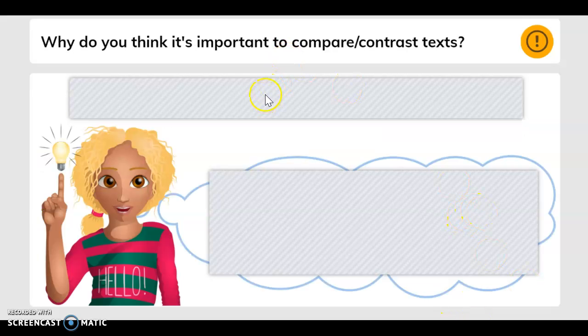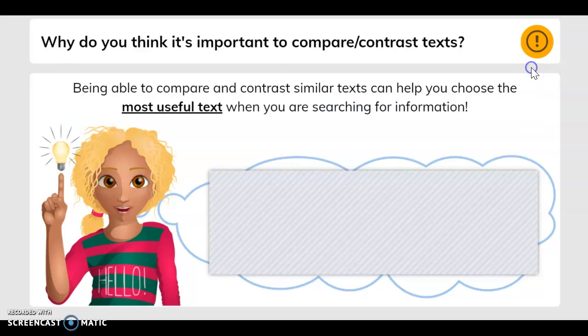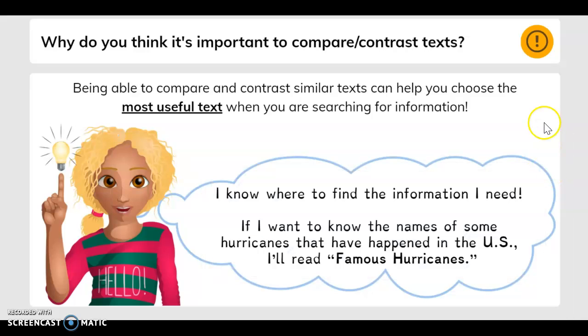Why do you think it's important to compare and contrast? Being able to compare and contrast similar texts can help you choose the most useful text when you are searching for information. I know where to find the information I need. If I want to know the names of some hurricanes that have happened in the United States, I'll read Famous Hurricanes.